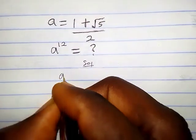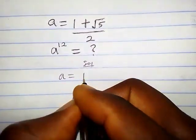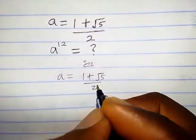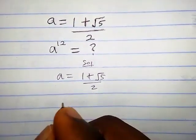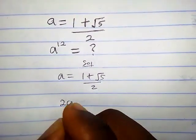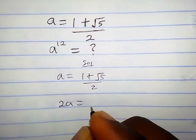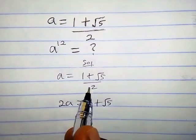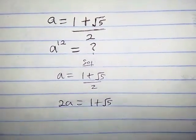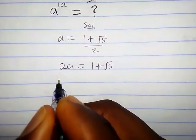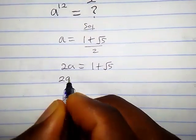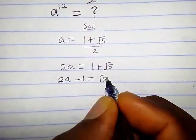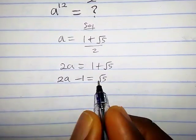We have a equals one plus square root of five over two. When we cross multiply, we get two a equals one plus square root of five. Proceeding further, we have two a minus one equals square root of five, so let's square both sides.